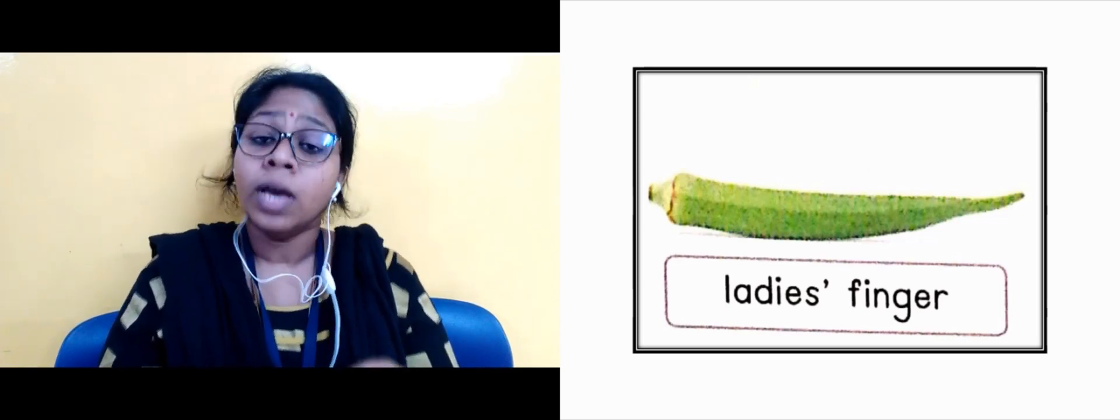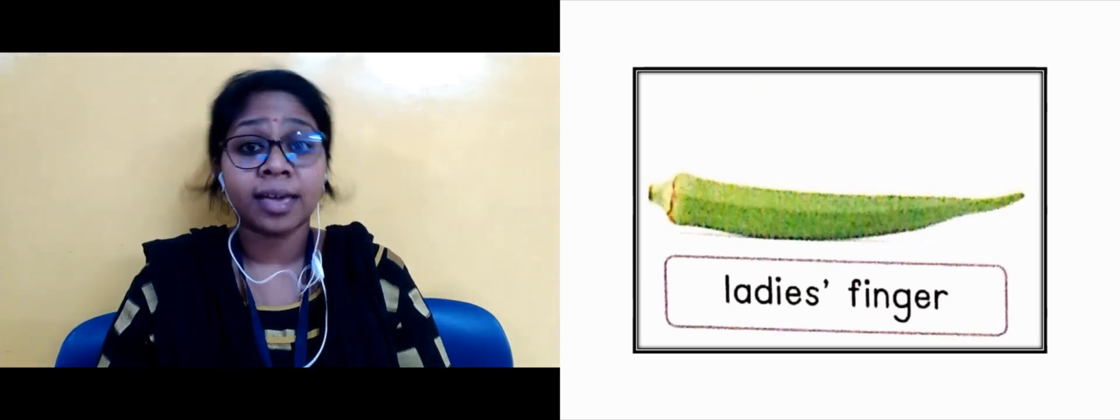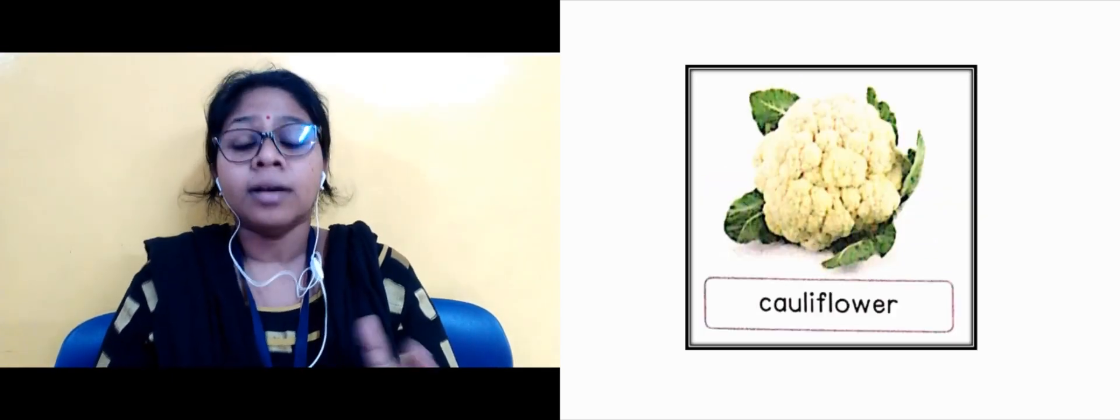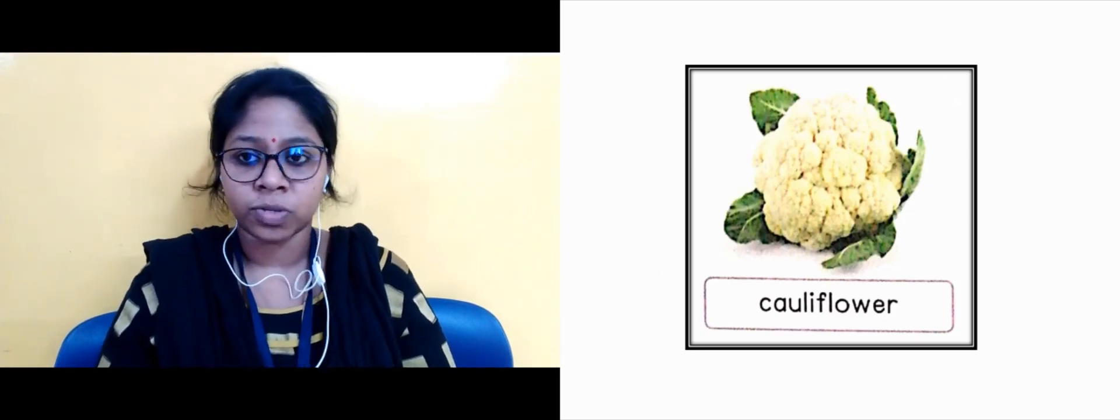And in the next slide is again bell pepper. Isko capsicum bhi bolte hai, aur iska correct name hai bell pepper. Aur iska colors kya kya, kya colors mein hota hai? Red, yellow, aur upar hum ne capsicum ke naam pe green color ka bhi dekha.